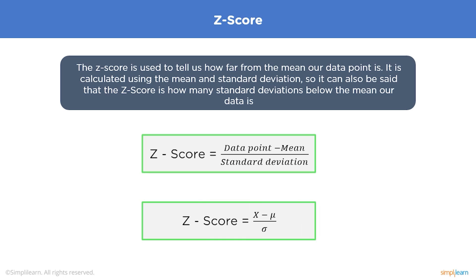In the z-distribution, data points are called z-scores. A positive z-score means the x value is greater than the mean; a negative z-score means it is less than the mean; and a z-score of zero means the x value equals the mean. To standardize a value from a normal distribution, subtract the mean from the individual value and divide by the standard deviation.